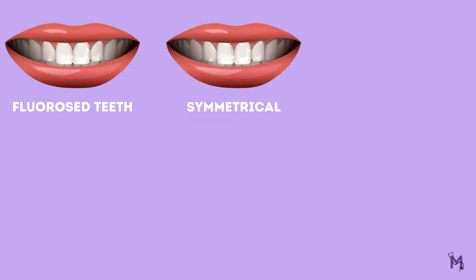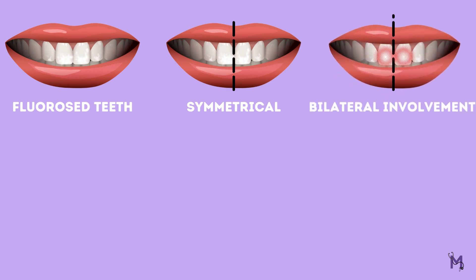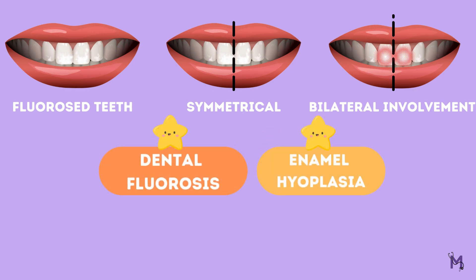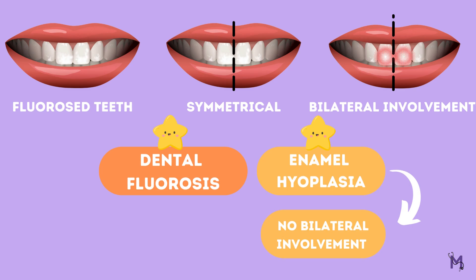In case you have come across a patient with dental fluorosis, you must have noticed that it occurs symmetrically within the dental arch. That is, if the central incisor of the first quadrant is affected, the central incisor of the second quadrant too will be affected, since fluorosis always occurs bilaterally. This is one of the major points of difference between dental fluorosis and enamel hyperplasia. Enamel hyperplasia may not necessarily occur bilaterally, while dental fluorosis is always bilateral.